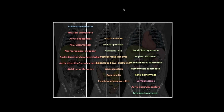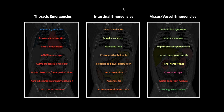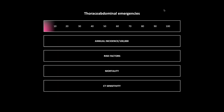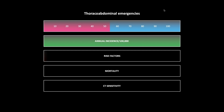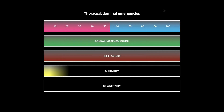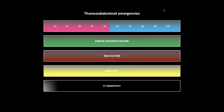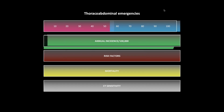Thoraco-abdominal emergencies — I like to color code things by organ. The first group are thoracic emergencies, the next group intestinal emergencies, and lastly viscous and vessel emergencies. You'll see I have the typical age range and gender distribution: pink for female, blue for male, white for equal in both genders. We will do the annual incidence of each pathology per hundred thousand — that's in green. I'll present icons representing the risk factors in red, the percentage mortality, and then the CT sensitivity.